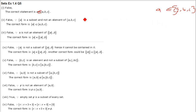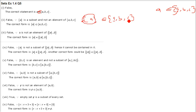Second statement: {a} ∈ {a, b, c}. This is also false. Here {a} is a set, and we have only the element a inside {a, b, c}, not the set {a}. For {a} to belong here, the set {a} would need to be listed as an element. It is not there.